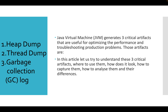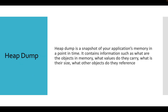Heap dump is a snapshot of your application's memory. Java is running, it has classes and objects, it creates multiple objects — and heap dump shows how those objects are stored and utilized, how they are placed within memory, whether they are in the young generation or old generation. Young generation contains recently created objects; old generation contains older objects. Heap dump provides the complete snapshot of your application's memory at a particular point in time — what values are there, what objects are there — all those details.